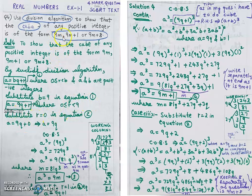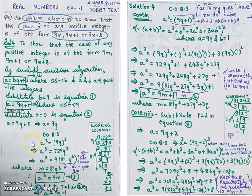Case 1: comparing 9m with bq plus 0, the remainder r is 0. So a = 9q plus 0, which gives a = 9q. Since the question asks us to cube, we cube both sides: a³ = (9q)³.